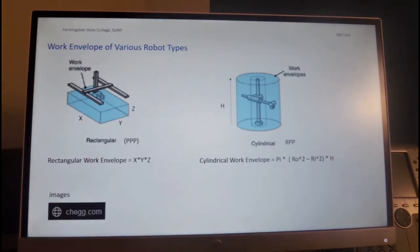Now, the simplest form of a work envelope is of a rectangular robot, which is called PPP, which stands for prismatic, prismatic, prismatic. These are the joint one prismatic, two for this axis, and up and down for the Z. So the work envelope is simply X, Y, and Z.